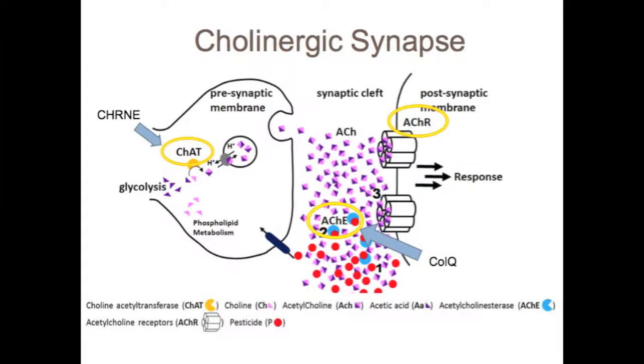This pathway also includes a specific tyrosine kinase, MuSK, and an acetylcholine receptor clustering protein, Rapsin.